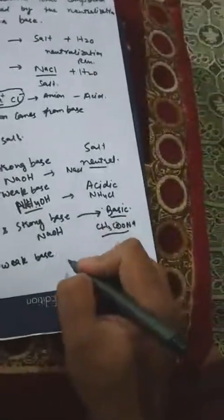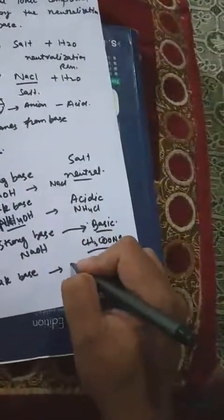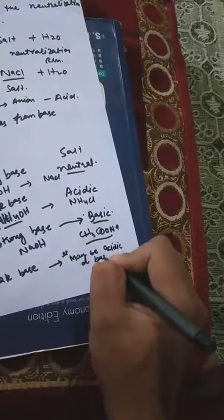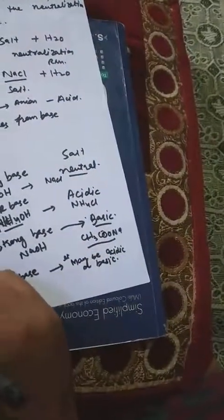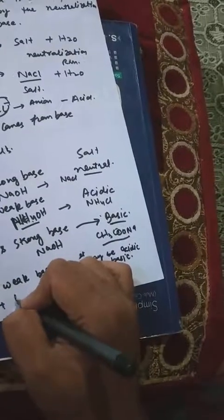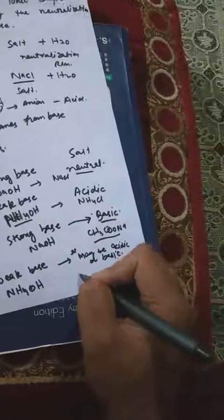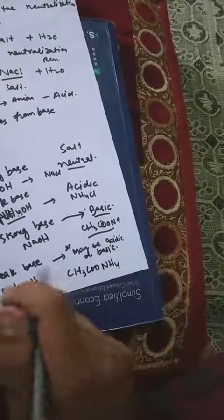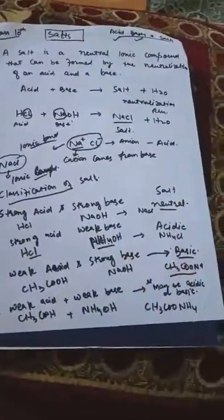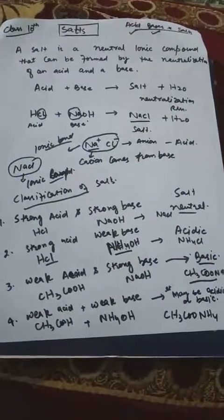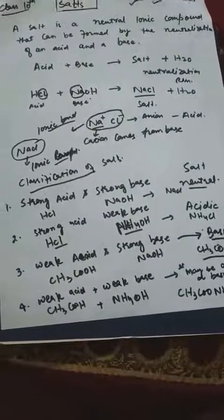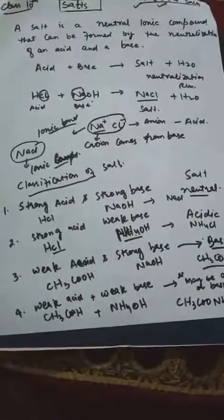If a weak acid and a weak base react, the salt may be acidic or basic. For example, weak acid CH₃COOH reacts with weak base NH₄OH, and the salt formed is CH₃COONH₄. This salt can be acidic or basic depending on the relative strengths of the acid and base.